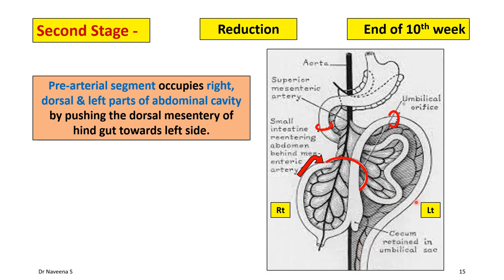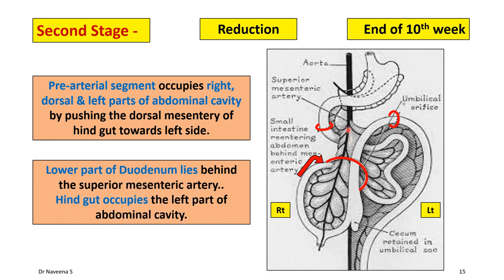The major change to observe here is that as the pre-arterial segment migrates towards the left side, dorsal to the superior mesenteric artery, the lower part of the duodenum — which is derived from the proximal part of the midgut — lies behind the superior mesenteric artery. At the same time, the entire hindgut occupies the left part of the abdominal cavity.